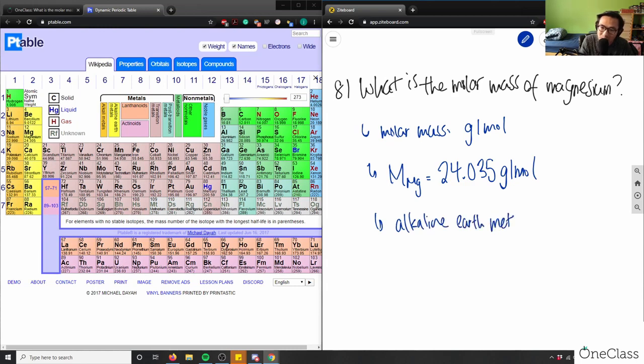Alkaline earth metal. So this here is my answer, 24.035, simply by just looking at our periodic table, the molar mass of magnesium is this answer here.